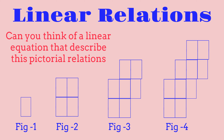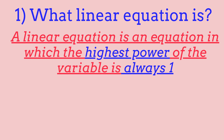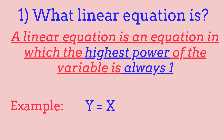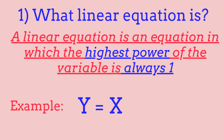A linear equation is an equation in which the highest power of a variable is always 1. The simplest form of a linear equation is y equals x. There's nothing really special about this — y is equal to x and x is equal to y. If we were to graph it, the line would directly pass through (0, 0) and it would be a straight line.